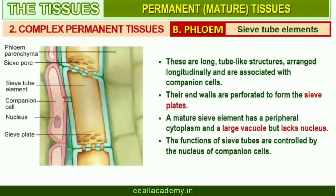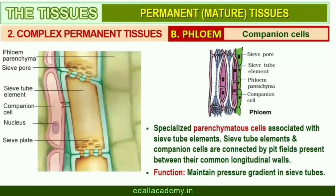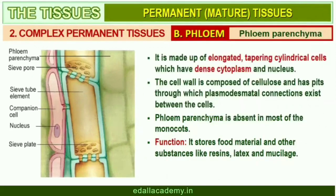A mature sieve element possesses a peripheral cytoplasm and a large vacuole but lacks a nucleus. The functions of sieve tubes are controlled by the nucleus of companion cells. Companion cells are specialized parenchyma cells closely associated with sieve tube elements. The sieve tube elements and companion cells are connected by pit fields present between their common longitudinal walls. Companion cells help in maintaining the pressure gradient in the sieve tubes. Phloem parenchyma is made up of elongated, tapering cylindrical cells which have dense cytoplasm and nucleus. It stores food material and other substances like resins, latex, and mucilage. Phloem parenchyma is absent in most monocotyledons.